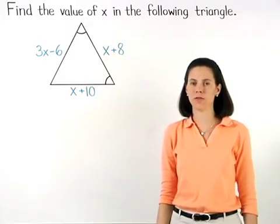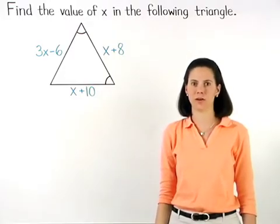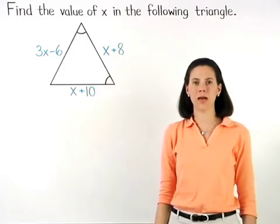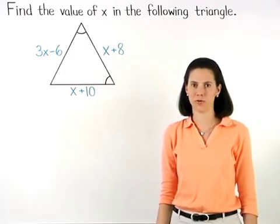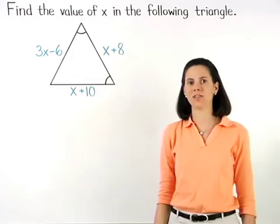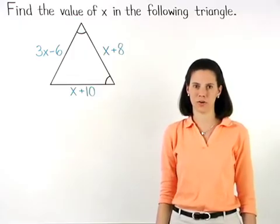Remember that the converse of the isosceles triangle theorem states that if two angles of a triangle are congruent, then the sides opposite those angles are congruent.